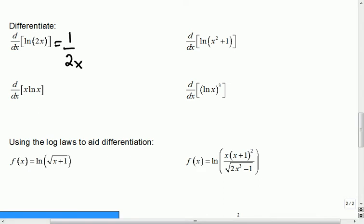Okay, we're not done though because there's an outside function and an inside function. So it's the derivative of the outside which is 1 over 2x times the derivative of the inside which is 2. That means those would cancel and we still end up with 1 over x.